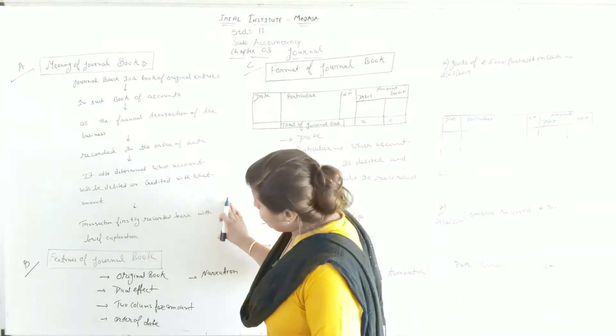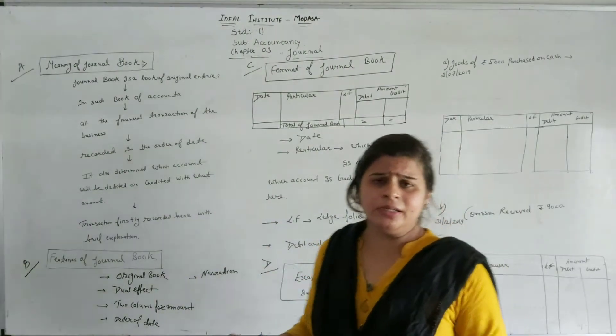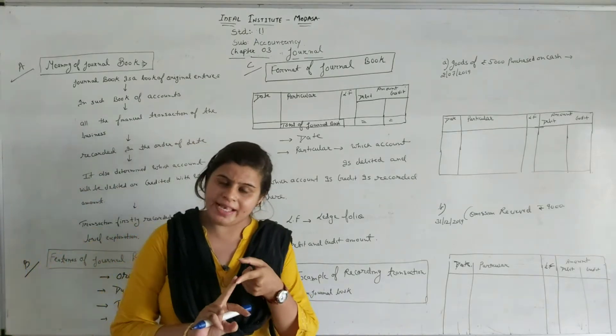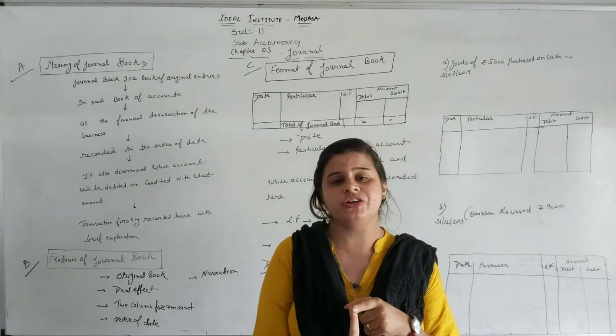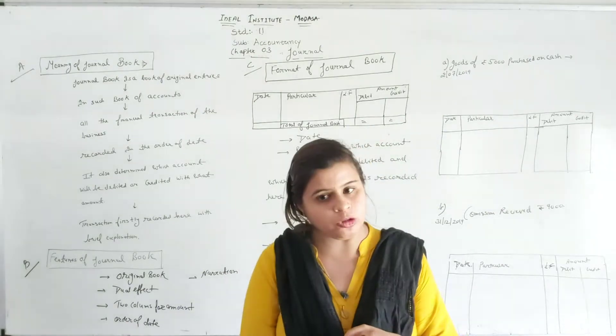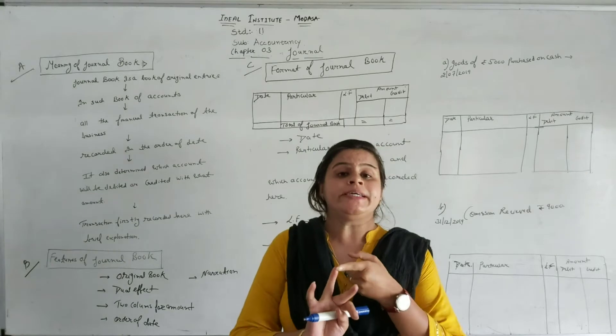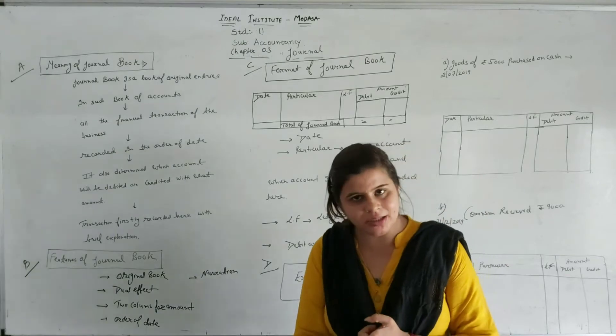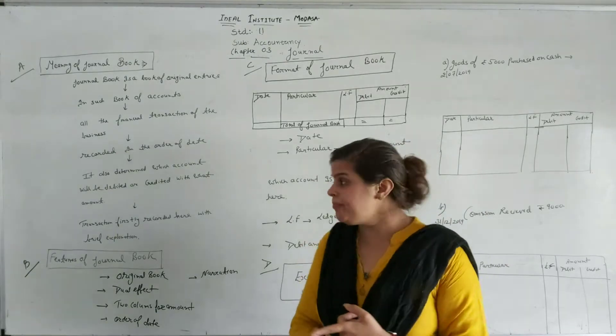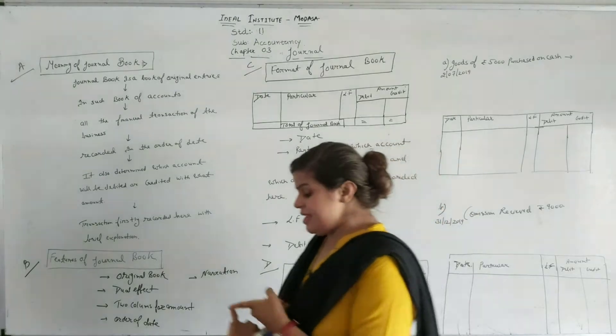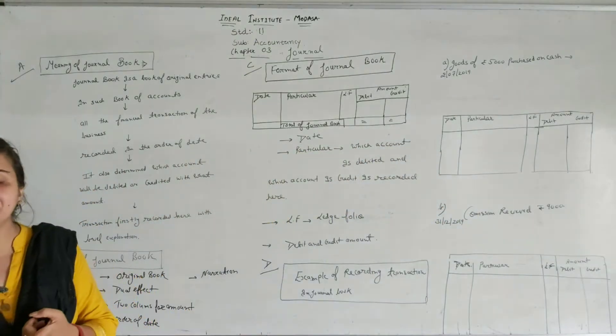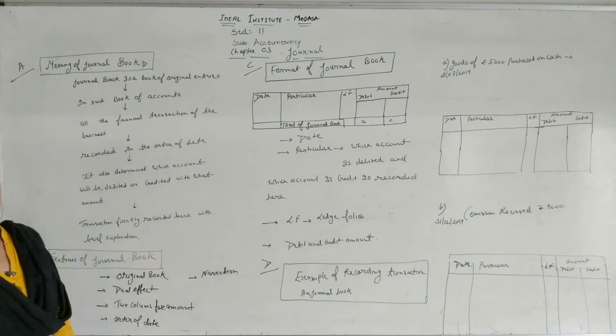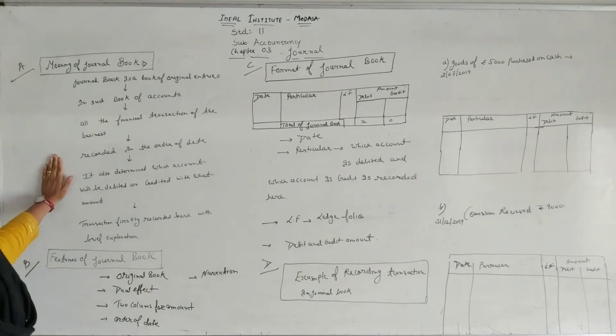After summing up all the points, you can easily remember that the journal book is the original book. It is written in your book where the transaction is recorded for the first time with brief explanation. In the journal, without any transaction we learn to debit or credit any transaction. The amount, they learn to record. This will be according to the order of date. So this is our journal book.